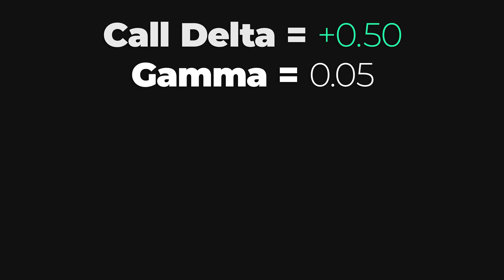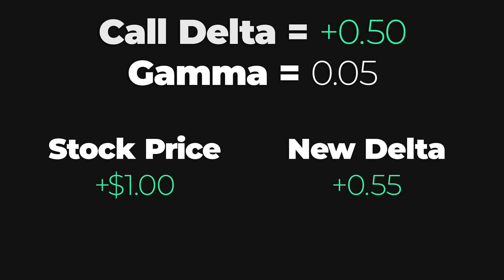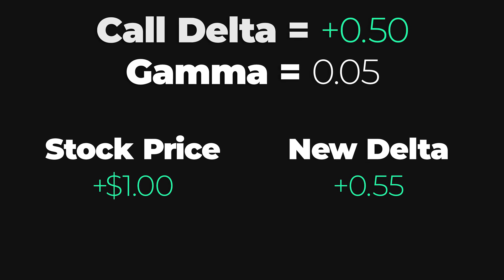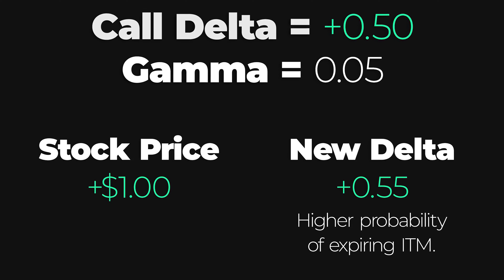If we interpret Delta as the estimated probability of an option expiring in the money, then Gamma represents the change in that probability as the stock price changes. For example, if we have a call with a Delta of 0.5 and a Gamma of 0.05, and the stock price goes up by $1, the Delta increases to 0.55, indicating a higher chance of expiring in the money. This makes sense because if the stock price is increasing towards or above the call's strike price, the probability of expiring in the money rises, making the option more sensitive to stock price changes.